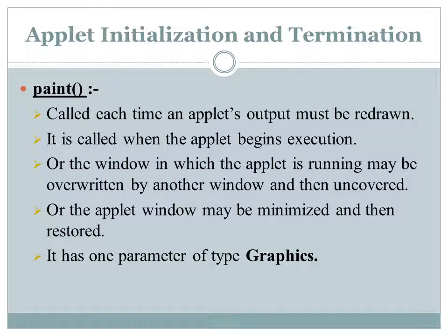The paint method is used to draw output to an applet window. It is called when the applet begins execution and every time the applet window is maximized or restored. If a running applet window is overwritten by another window and later uncovered, paint will be called again to redraw that output. The paint method receives an argument of type Graphics.